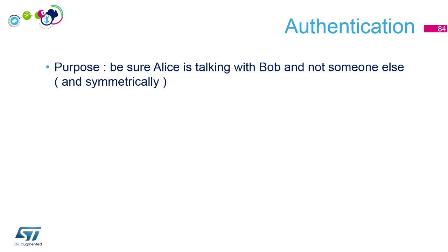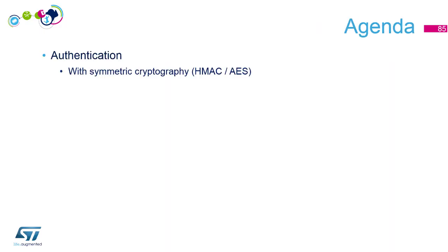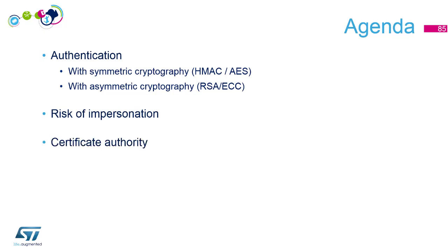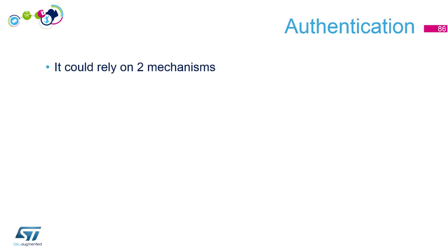Authentication: the purpose of authentication is that Alice wants to be sure she received data from Bob and not from somebody else, and Bob wants to be sure he received data from Alice and not from somebody else. This is directly symmetrical — they want to ensure who is talking to who. For this part, we will see that authentication can be addressed with symmetric cryptography and asymmetric cryptography, then we'll talk about the risk of impersonation, and finally how certificate authorities can mitigate this risk.